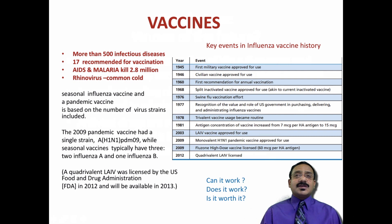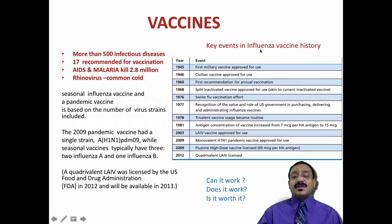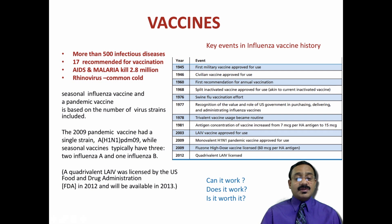Vaccines apply to both viral and bacterial infections. More than 500 infectious species have been reported, and 17 have been recommended for vaccination, including AIDS vaccine, malaria vaccine, and even a vaccine for the common cold rhinovirus. The influenza vaccine history spans from 1945 through to the 2012 quadrivalent vaccine, which was licensed in the U.S. and became available on the market by 2012.